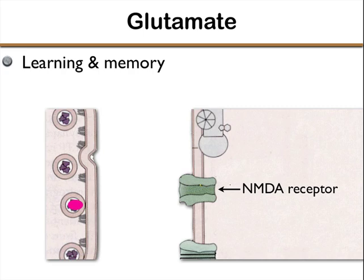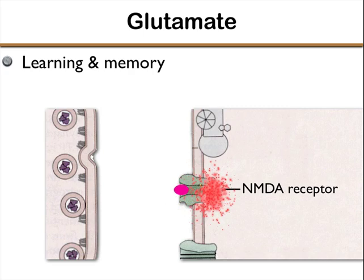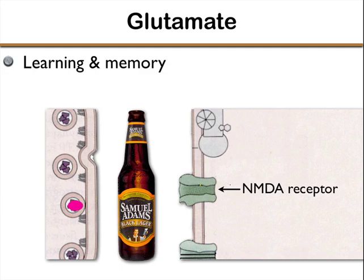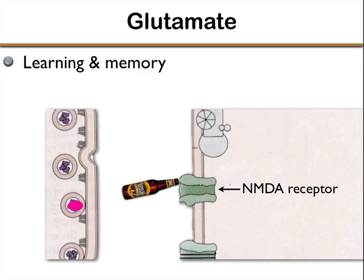Typically, here's what would happen: we have the presynaptic area of the synapse, and there's glutamate inside the synaptic vesicle, ready to be released across the cleft and lock into the NMDA receptor, which is specific to glutamate. It will bring the action potential across to the postsynaptic receptor site — it does its job. But what if you've been drinking alcohol? It turns out that alcohol is an antagonist to glutamate, so it blocks the NMDA receptor. Glutamate cannot lock into that site and get the message across. That's how I present that example in class.